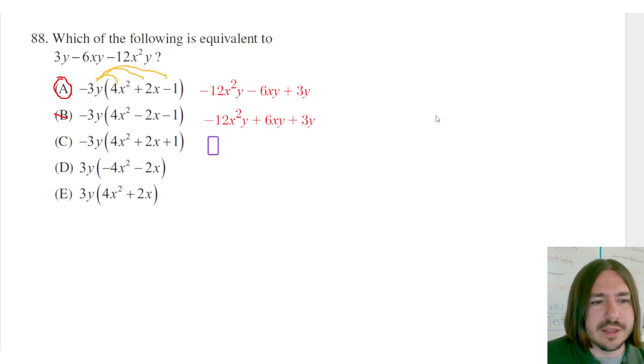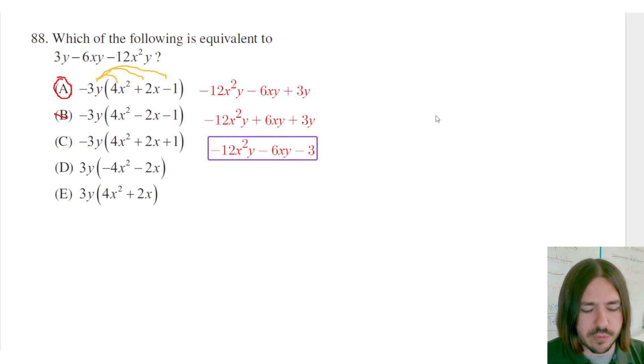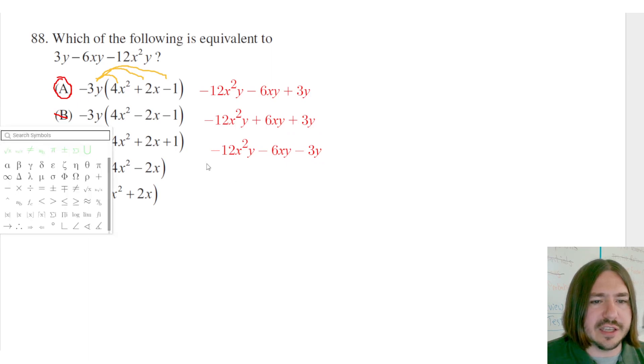Here we've got negative 12x squared y, then we've got negative 6xy, so that's looking good. But then we have negative 3y, which is not what the original problem was. So C is not going to work.